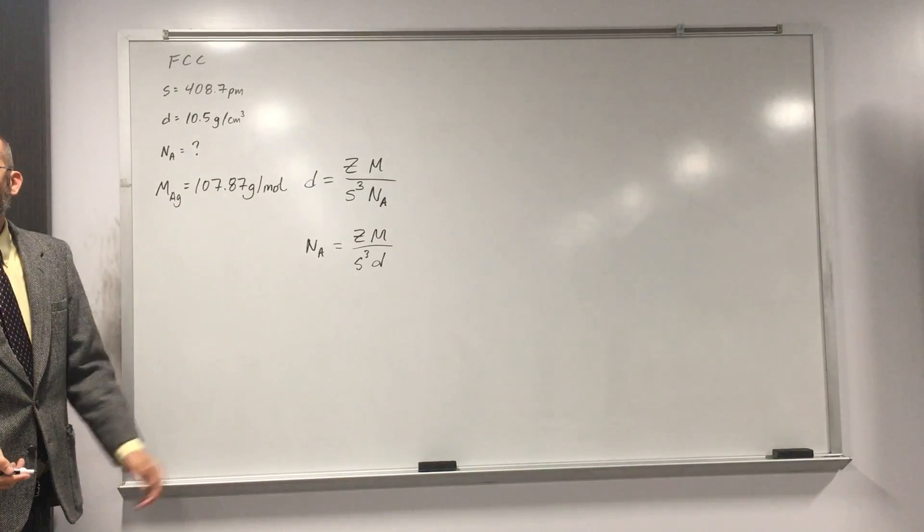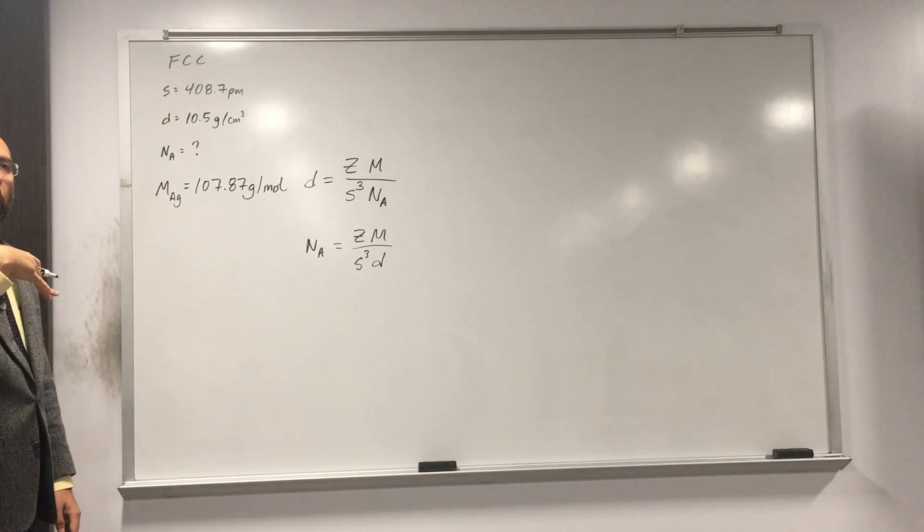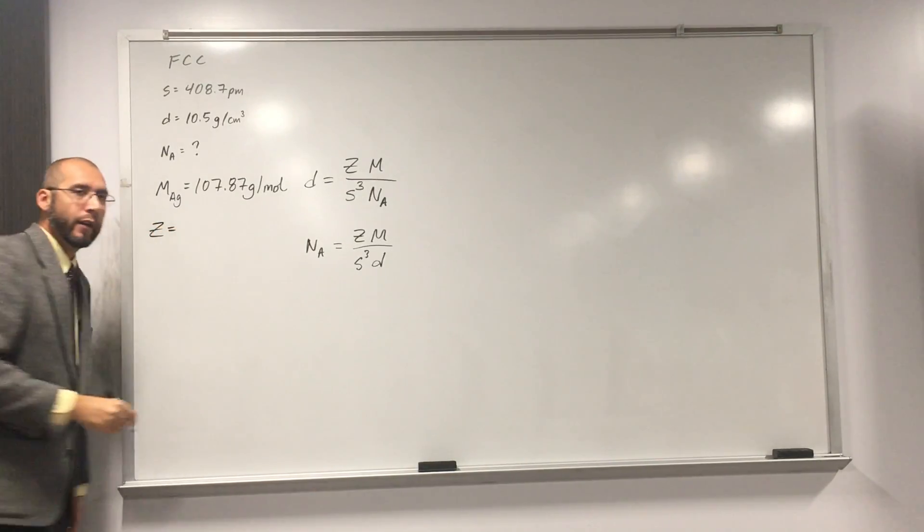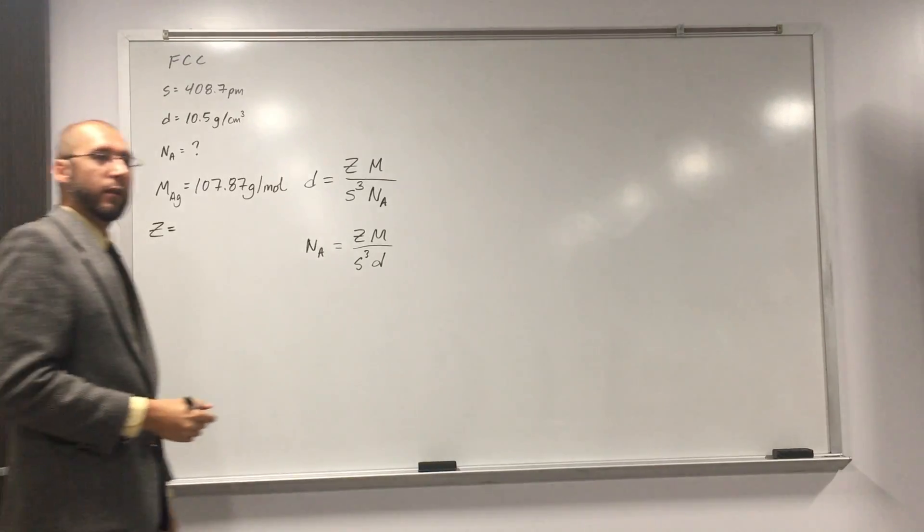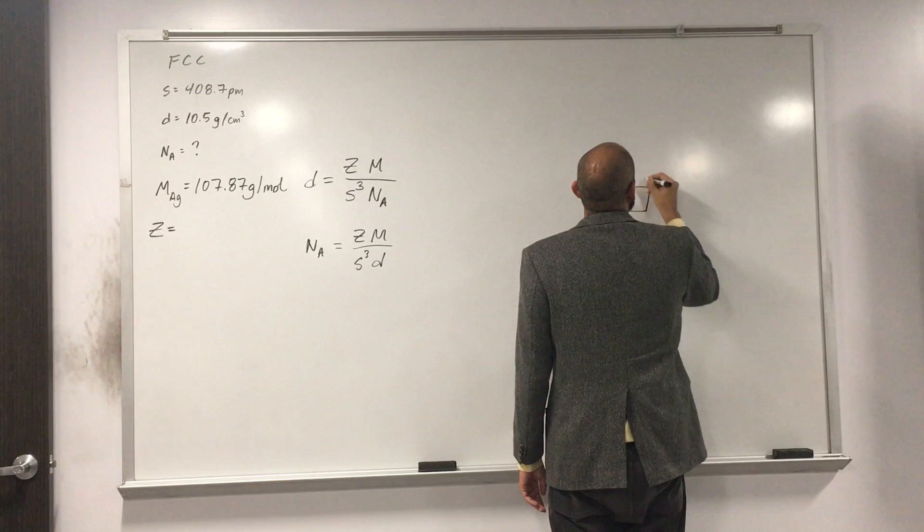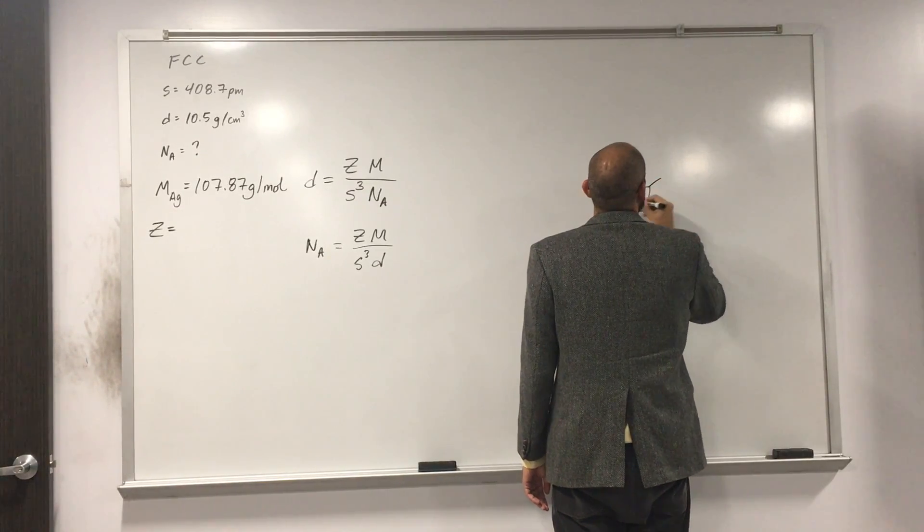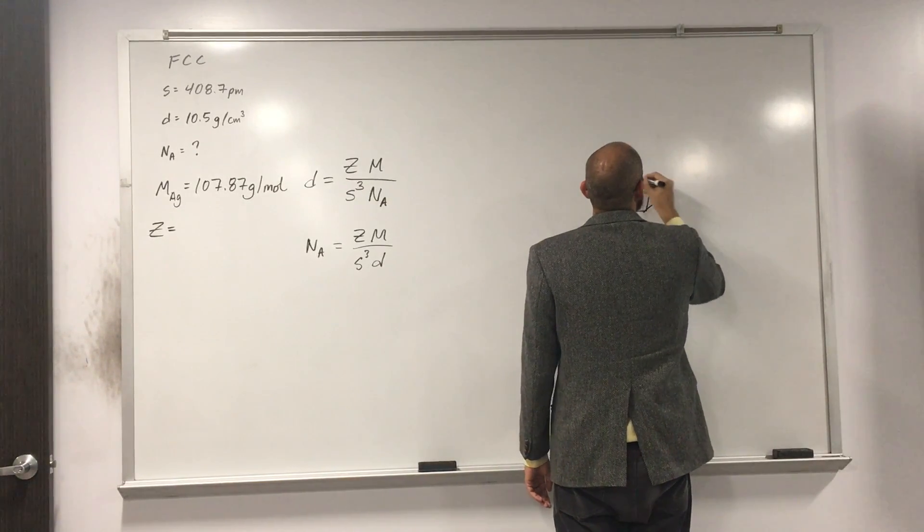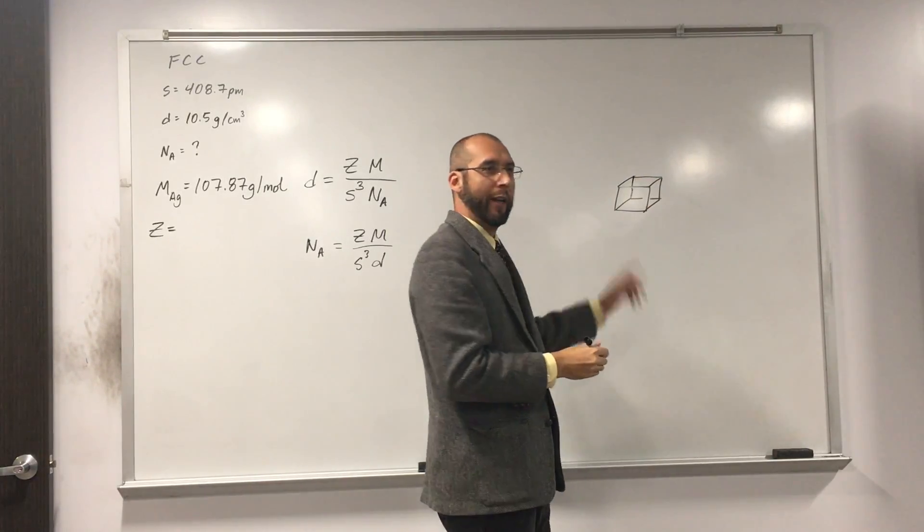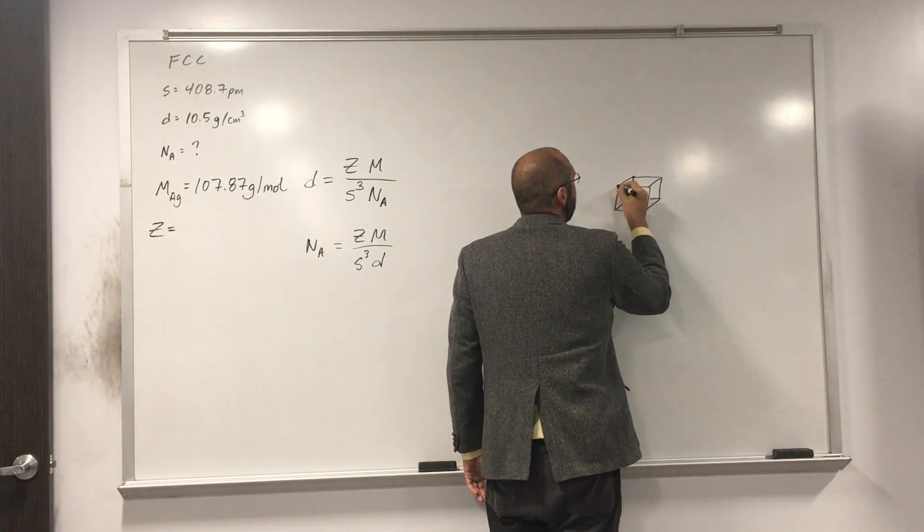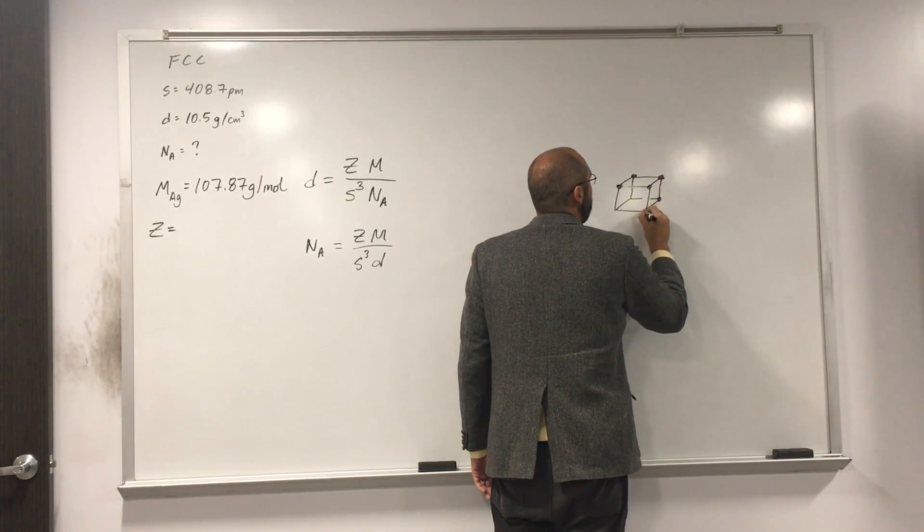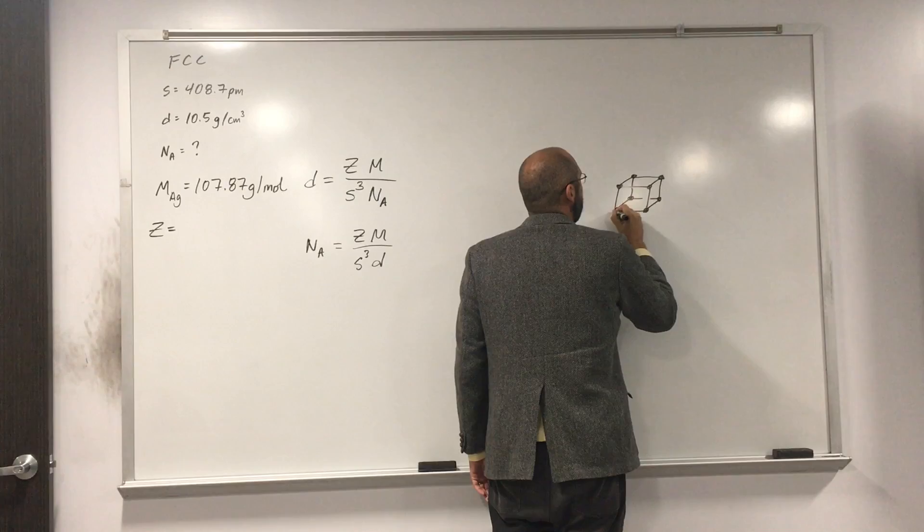And Z, that's the lattice points for face cubic cell. We should know how to calculate that. So do you remember the face cubic cell? Yeah, it's four. I saw you were riding in the air with your hand. I imagine you were doing this, right? With your hand. So what do we have? One, two, three, four, five, six, seven, eight.